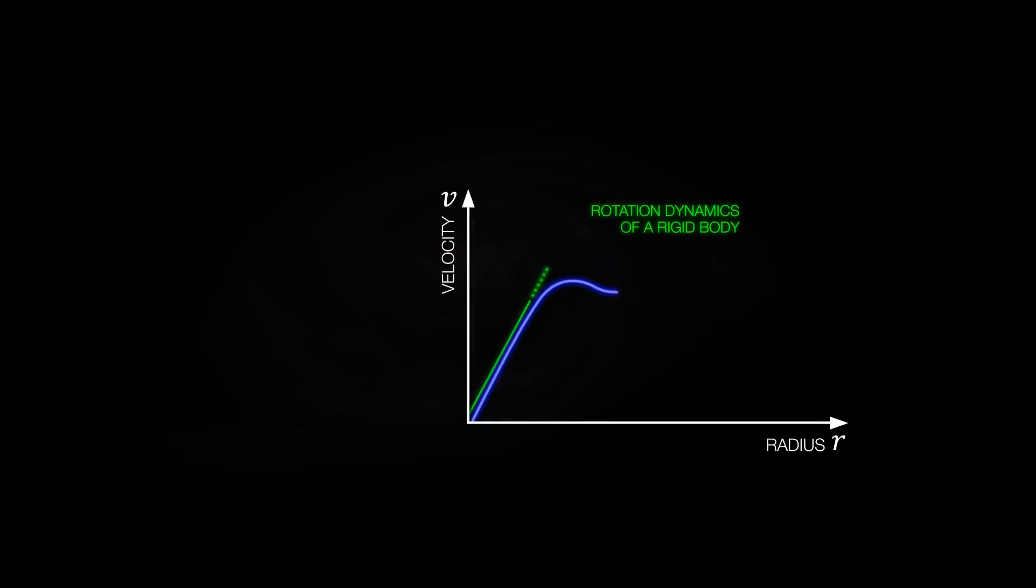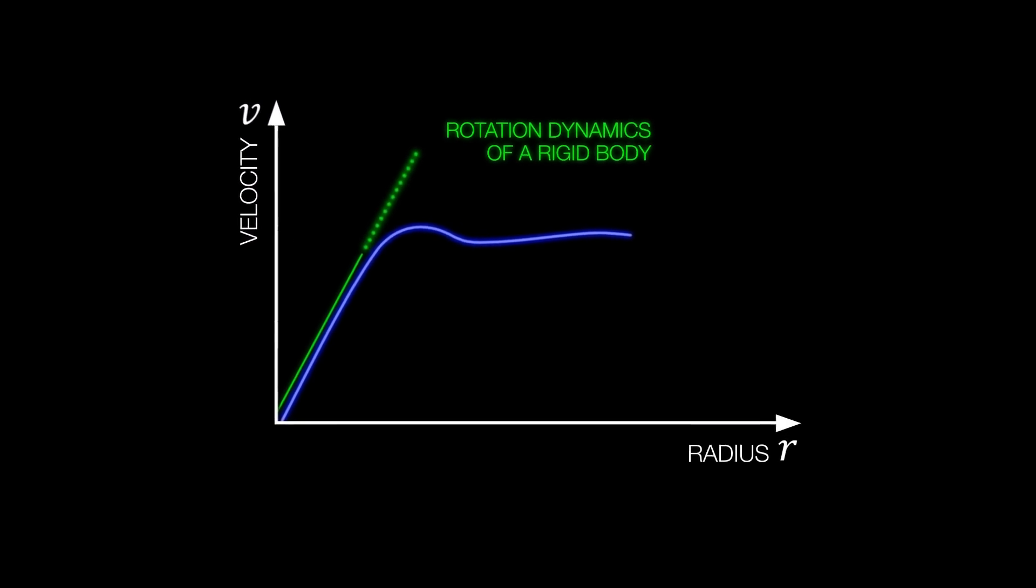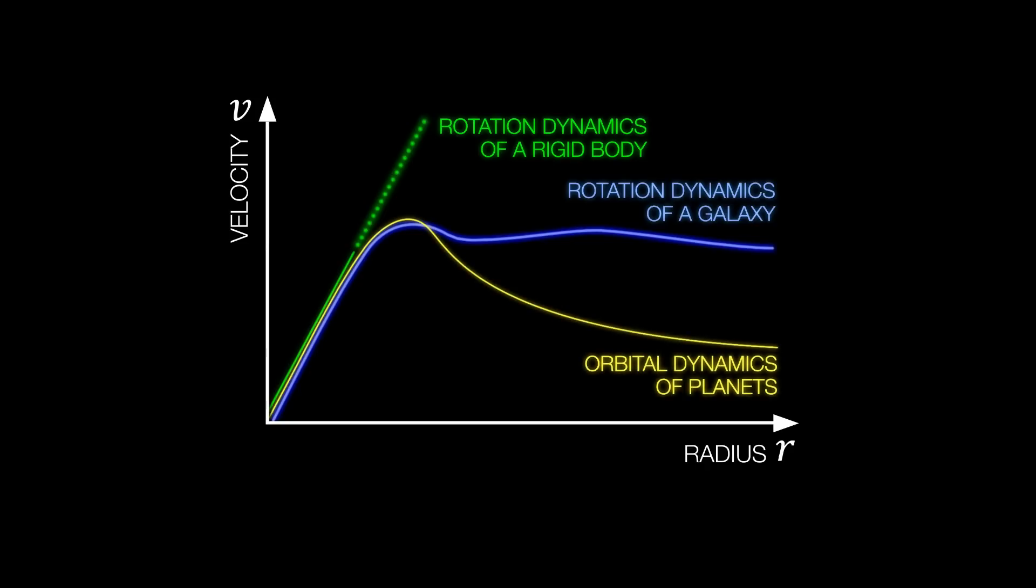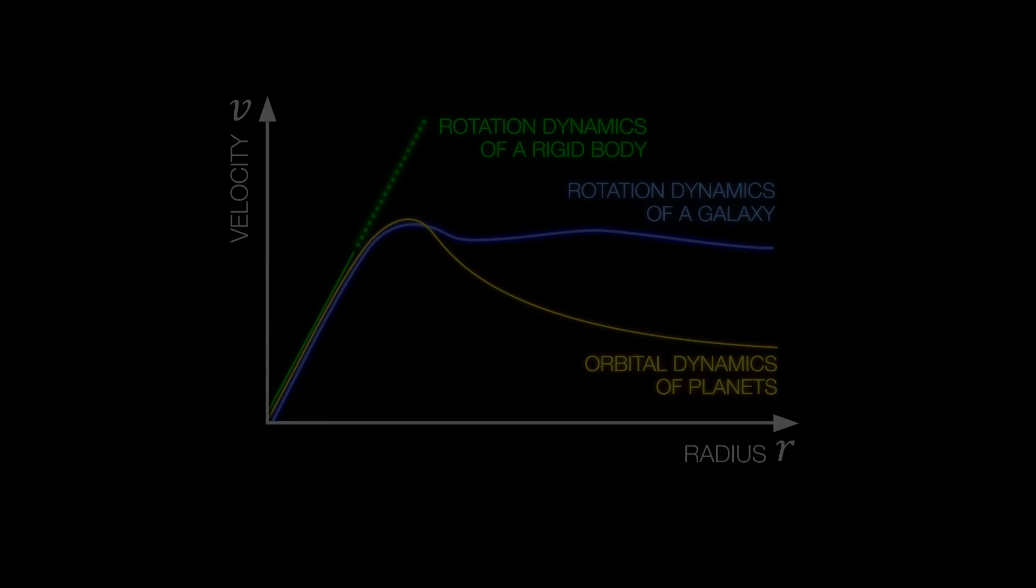Beyond a certain distance, the star density decreases greatly. Therefore, the rotational characteristics of a galaxy are a combination of the rotational dynamics of a rotating rigid body and the orbital dynamics of planets. The actually observed rotational dynamics of galaxies guarantees their stable rotation.